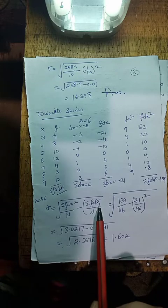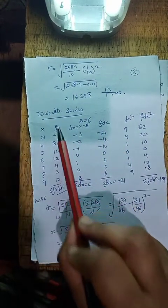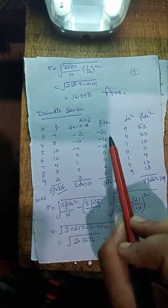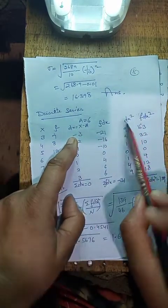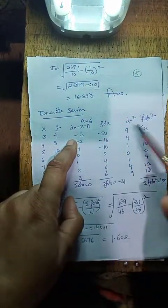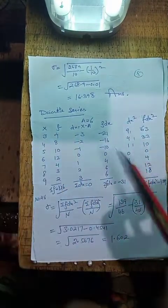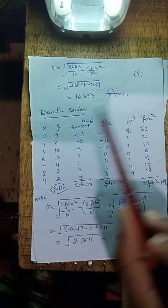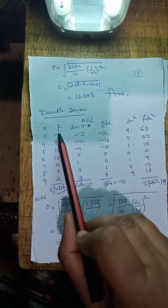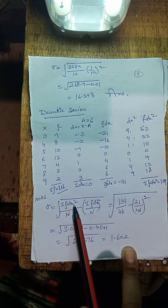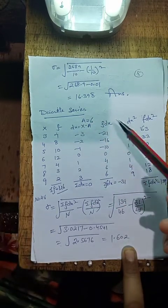हमें f·dx चाहिए। इसके लिए dx को f के साथ multiply करते हैं: 7 × (−3) = −21, similarly −16, −10. फिर dx का square करते हैं — squaring converts minus to plus: 9, 4, 1. Then dx² को f से multiply करते हैं ताकि f·dx² मिले। इन सब calculations के बाद सभी values को add करते हैं।